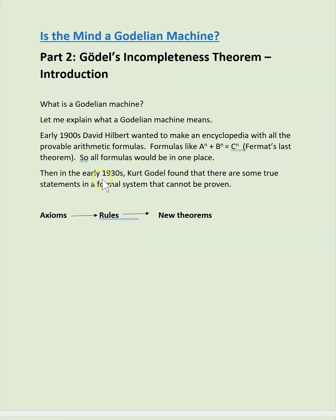Then in the early 1930s, Kurt Godel found that there are some true statements or true formulas in a formal system that cannot be proven.